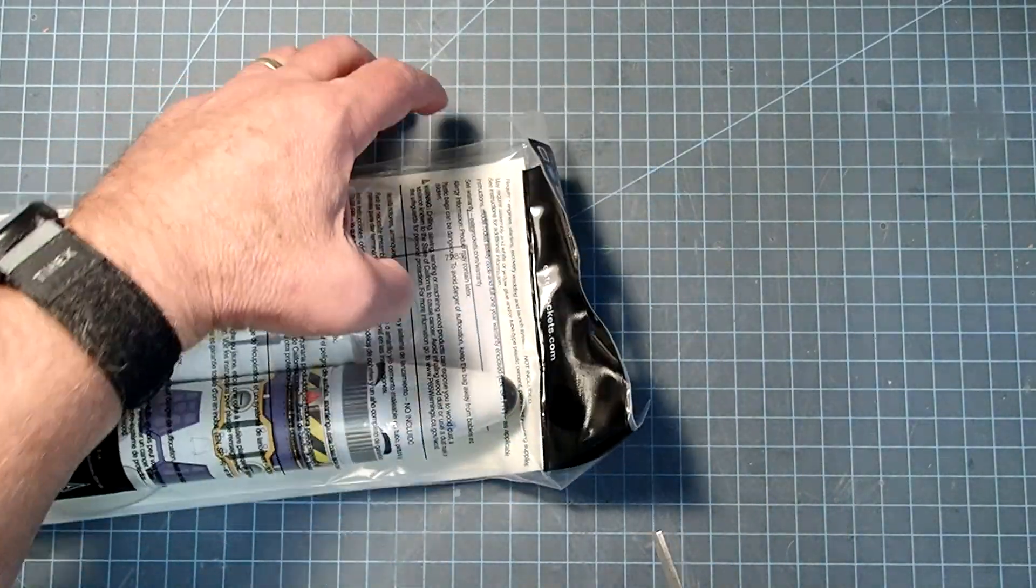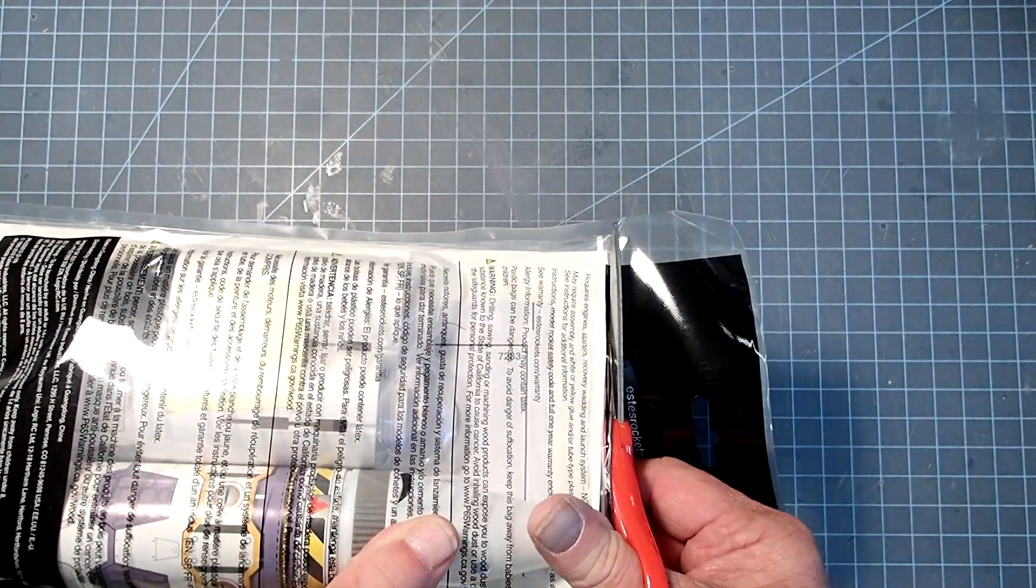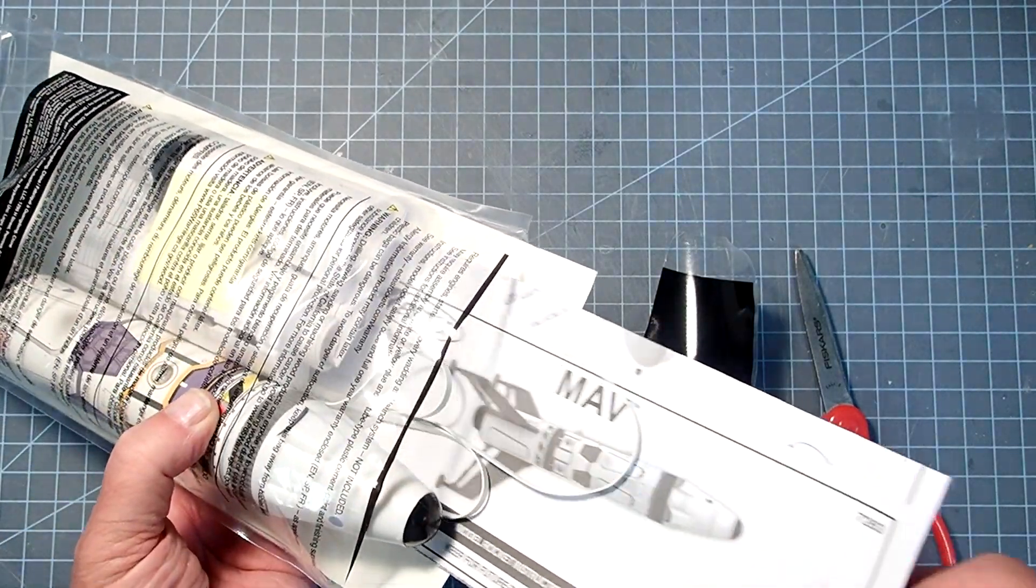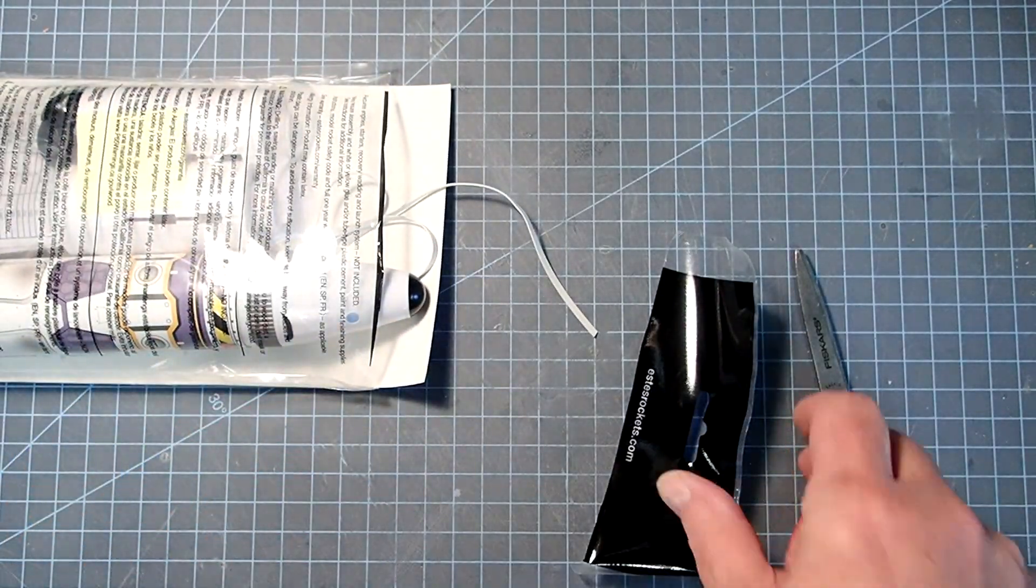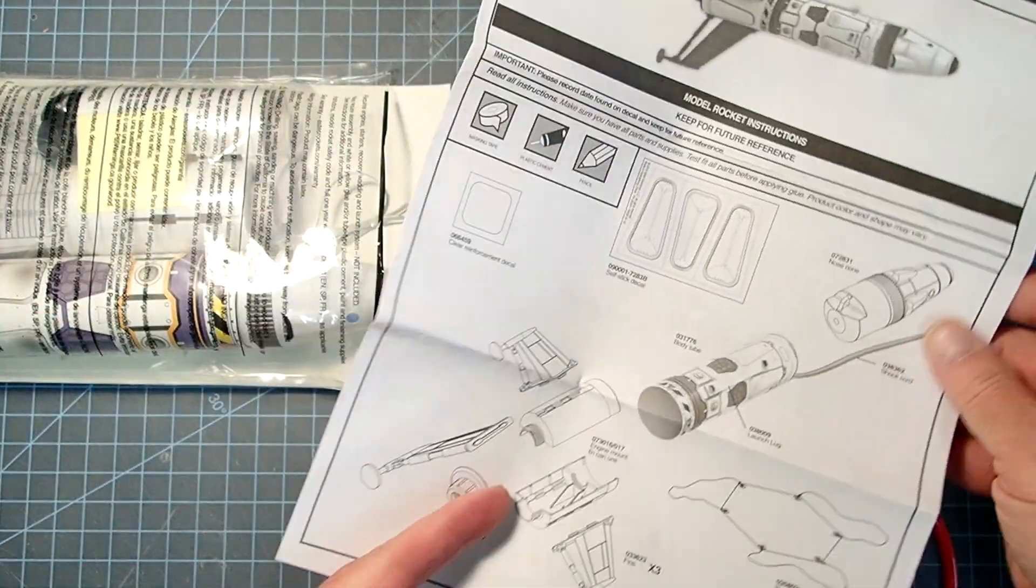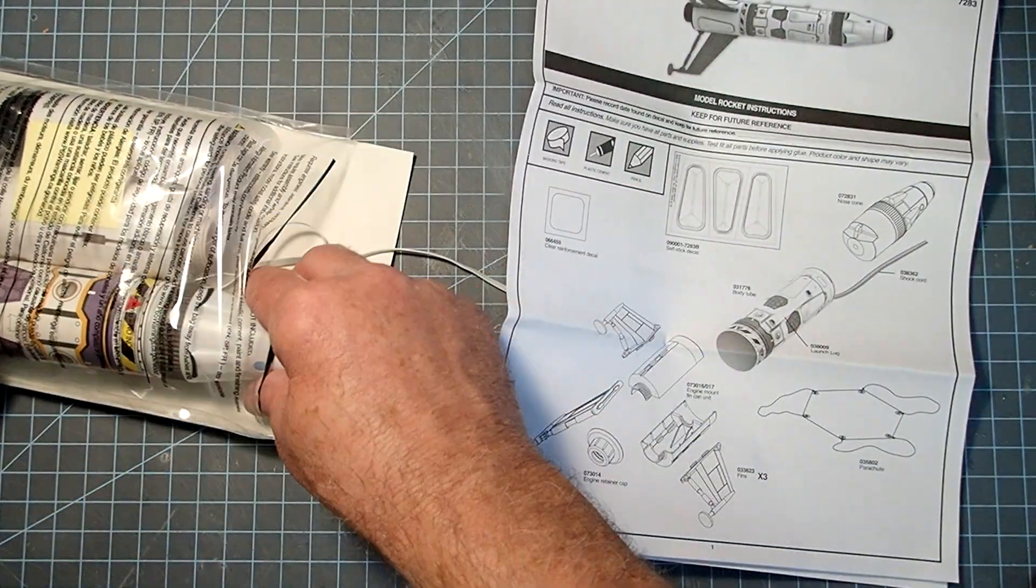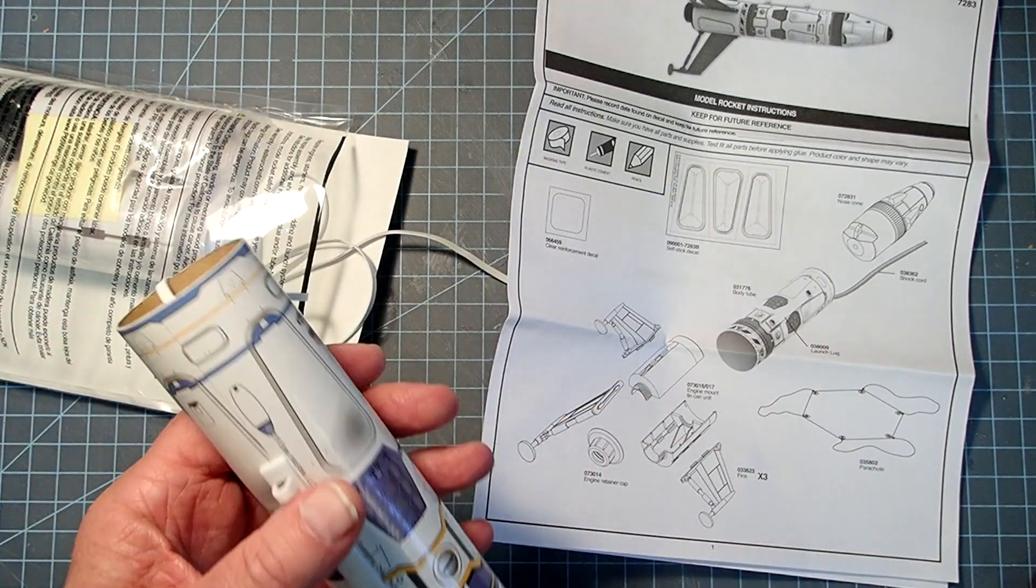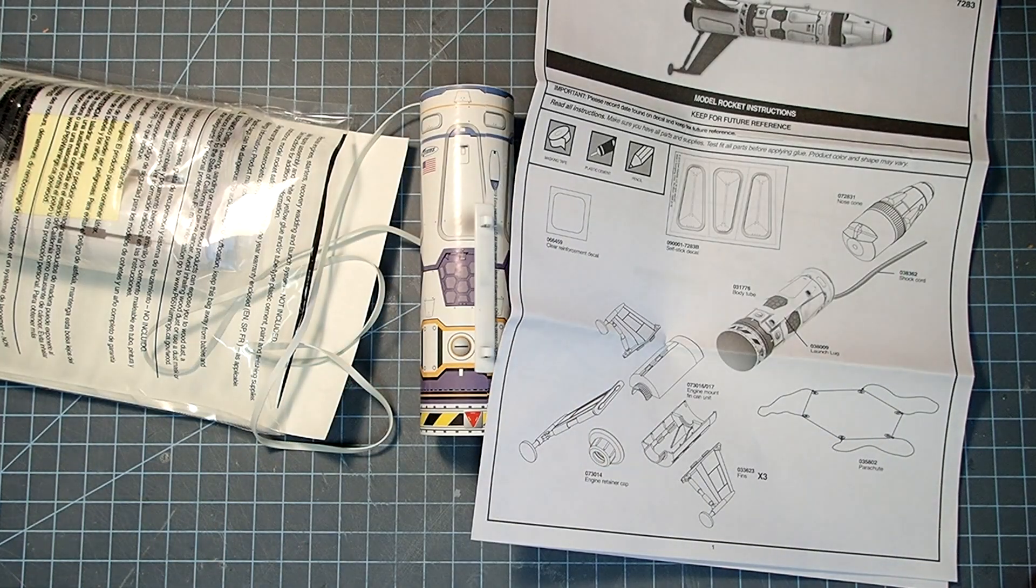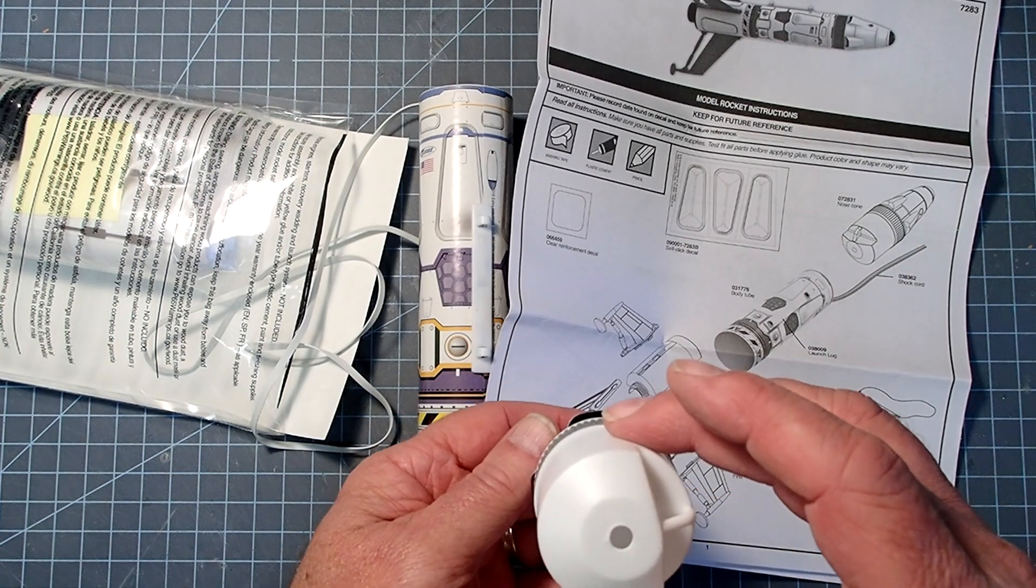So we'll go ahead and open this up and make sure we have all of our parts. First thing, pull out the instructions and that should have a parts list in it.